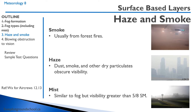And lastly, we have mist. Mist is very similar to fog, but the visibility is greater than five-eighths of a mile. Same mechanisms — sometimes people will look outside and say it's foggy, but the visibility is, let's say, three-quarters of a mile. From an aviation point of view, we refer to that as mist.